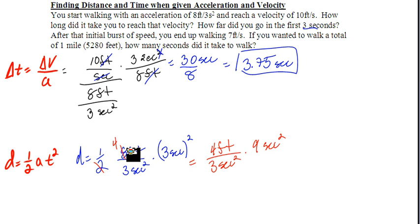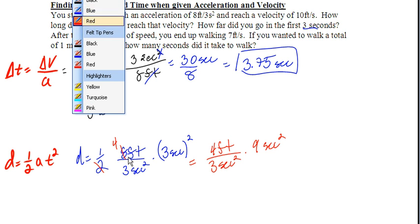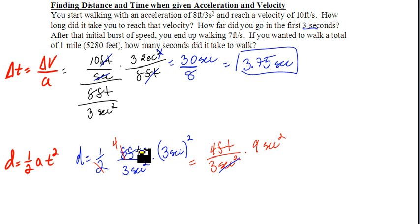Second times a second is a second squared, which then nicely helps me reduce this second squared second squared. I could also reduce my 3 and my 9 down to just 3. And I multiply across, so 4 times 3 is 12, and my only units are feet. So in 3 seconds, I go 12 feet.